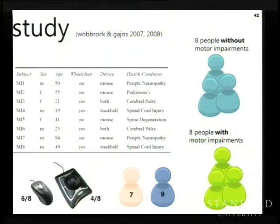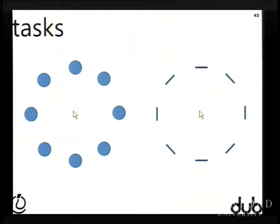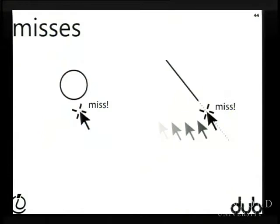We ran a study to see if there's a performance benefit with crossing. We had balanced groups of people with and without motor impairments, roughly gender-balanced, with trackball and mouse users. The task moved from inside out to circles, with crossing targets of the same diameter. We defined a miss as crossing anywhere through the extended line of the crossing goal but not over the segment itself — a fairly strict definition.